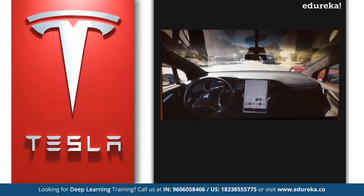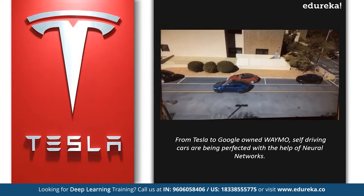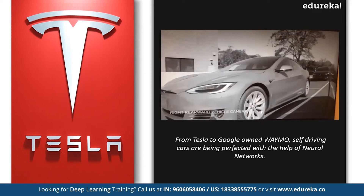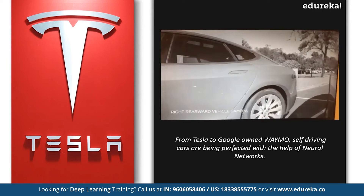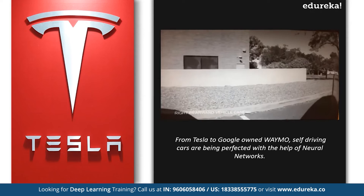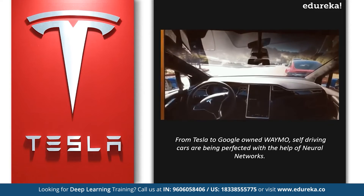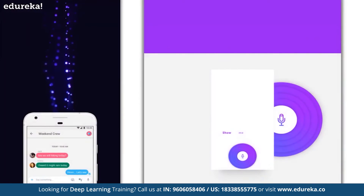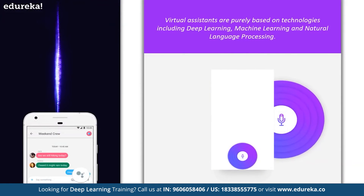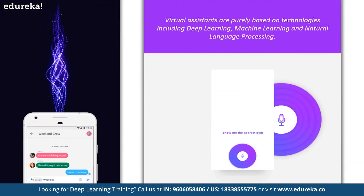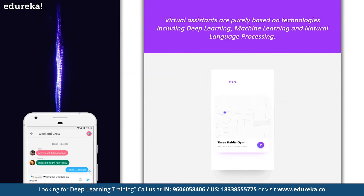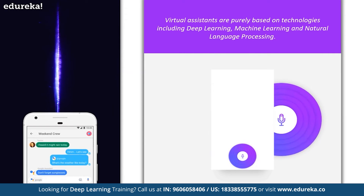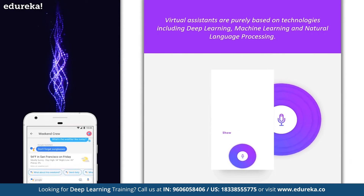Let's not forget to mention automated self-driving cars. Deep learning has played a huge role in this field. From Tesla to Google-owned Waymo, self-driving cars are being perfected with the help of neural networks. Then of course, we have virtual assistants like Siri, Alexa, and Cortana. These assistants are purely based on technologies including deep learning, machine learning, and natural language processing.